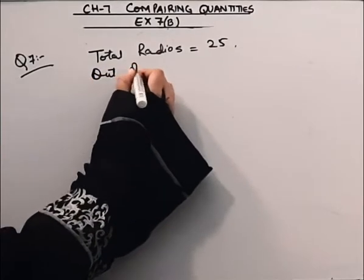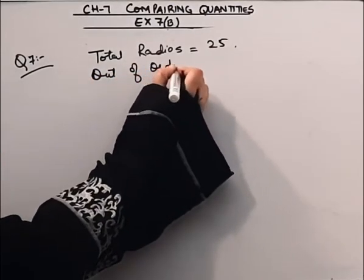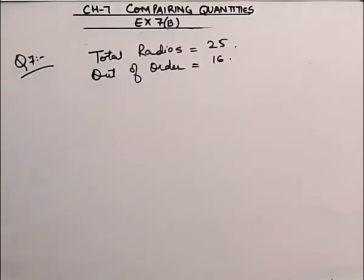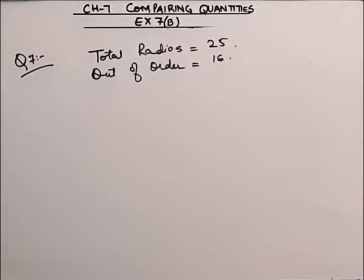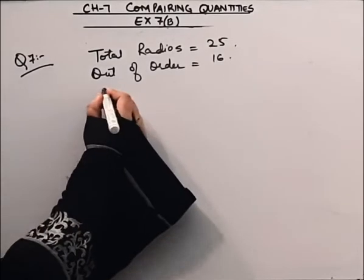Kuch out of order. Out of order mitzlag kharaab hai kuch. So let us see there are 16. 16 radios ab kharaab hai out of 25. We have to find out what percentage of radios are out of order.